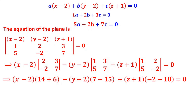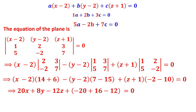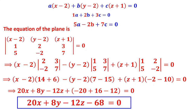Expanding the determinant: (x–2)(14+6) minus (y–2)(7–15) plus (z+1)(–2–10). This gives 20(x–2) plus 8(y–2) minus 12(z+1). Collecting constants: 20x plus 8y minus 12z minus 68 equals 0. Dividing throughout by 4 simplifies this to 5x plus 2y minus 3z minus 17 equals 0. This is how to find the equation of a plane through three points using the determinant method.